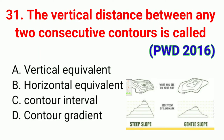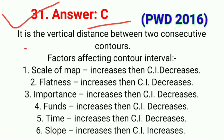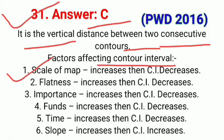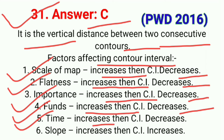Question number thirty-one: The vertical distance between any two consecutive contours is called. The correct answer is option C, contour interval. Factors affecting contour interval: as scale of map increases, contour interval decreases; as flatness increases, contour interval decreases; as importance increases, contour interval decreases; as time increases, contour interval decreases; but as slope increases, contour interval increases.